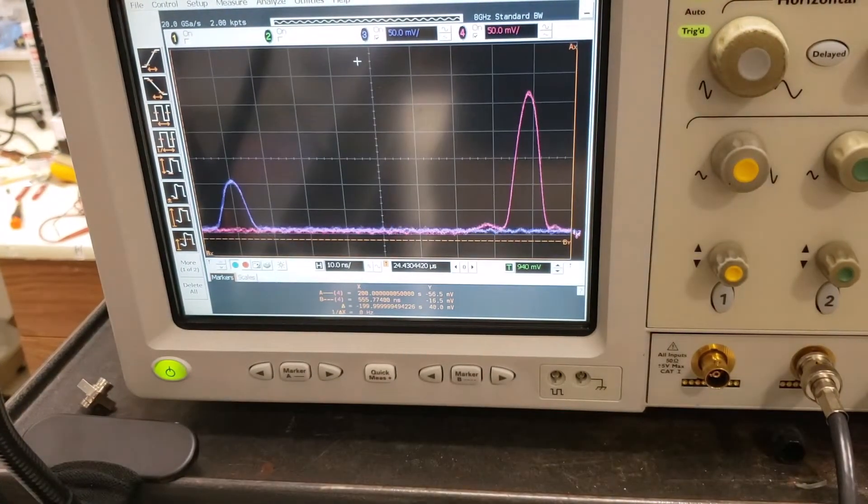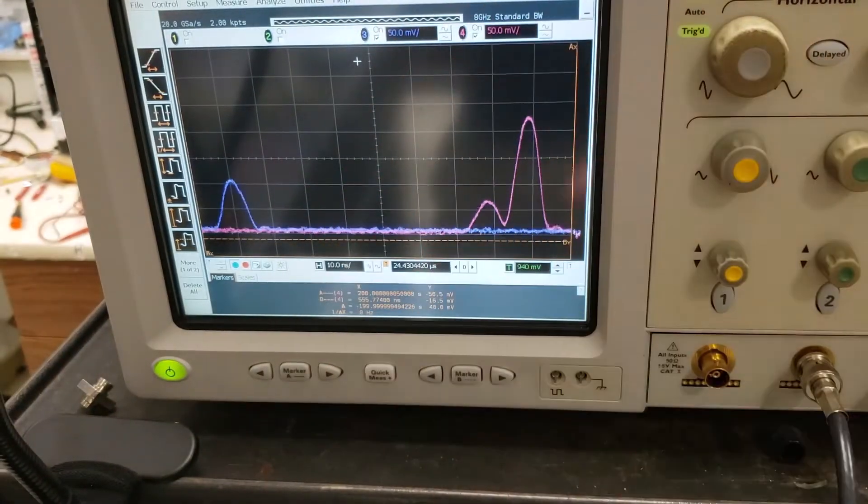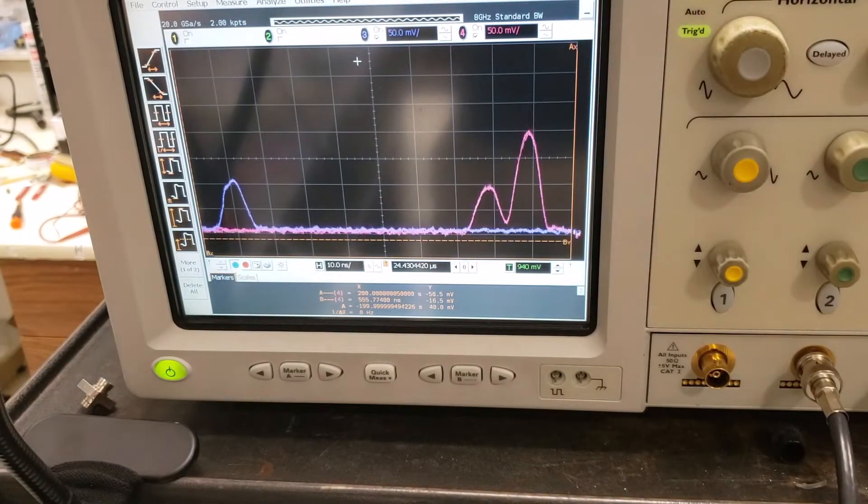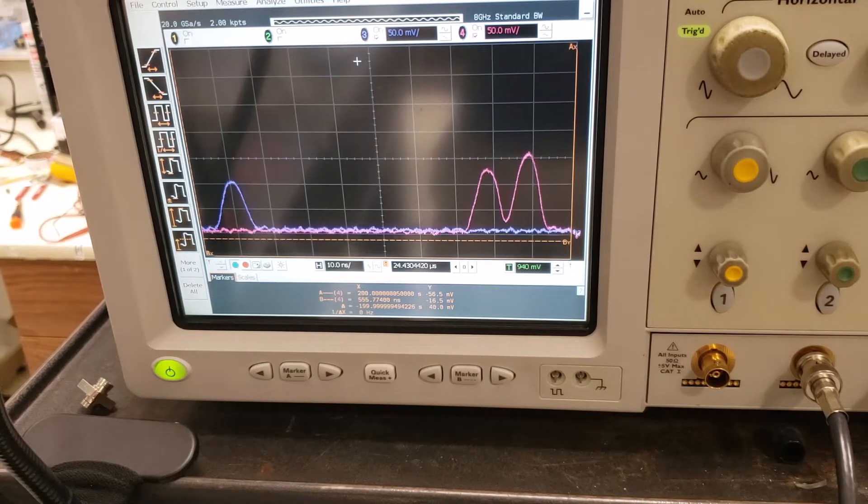And of course, if I choose some angle between, let's say 45 degrees or even some kind of circular polarization, then we're going to get something that's a bit more 50-50 in terms of the power in these two peaks.